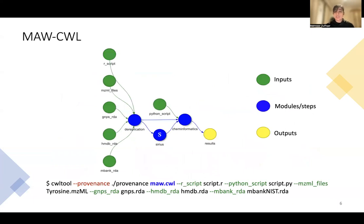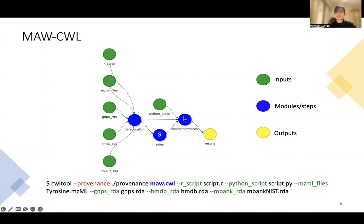Now MAW is written in CWL. As opposed to the previous version of the workflow which had two modules, we have divided the workflow into three modules. The first module takes an R script and runs the R part of the workflow. The second module takes results from this module and uses an independent software series to analyze some of the results. Lastly, the results from all these different modules are stored in the cheminformatics section of the workflow, which uses Python script and runs the Python workflow to generate the results.